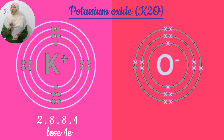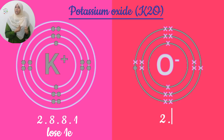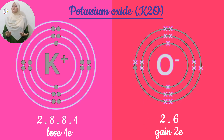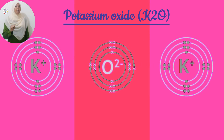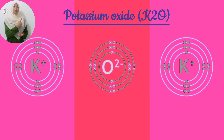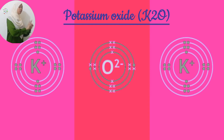The valence electron lost by potassium is transferred to oxygen. But here's something important: one potassium atom loses only one electron, but oxygen has an electron configuration of 2, 6 and needs to gain 2 electrons to become stable with a configuration of 2, 8. Since potassium can only lose 1 electron, we need 2 potassium atoms — each loses 1 electron, and both are gained by oxygen. That is the reason for the chemical formula K₂O: 2 potassium ions bonded to a single oxygen ion.